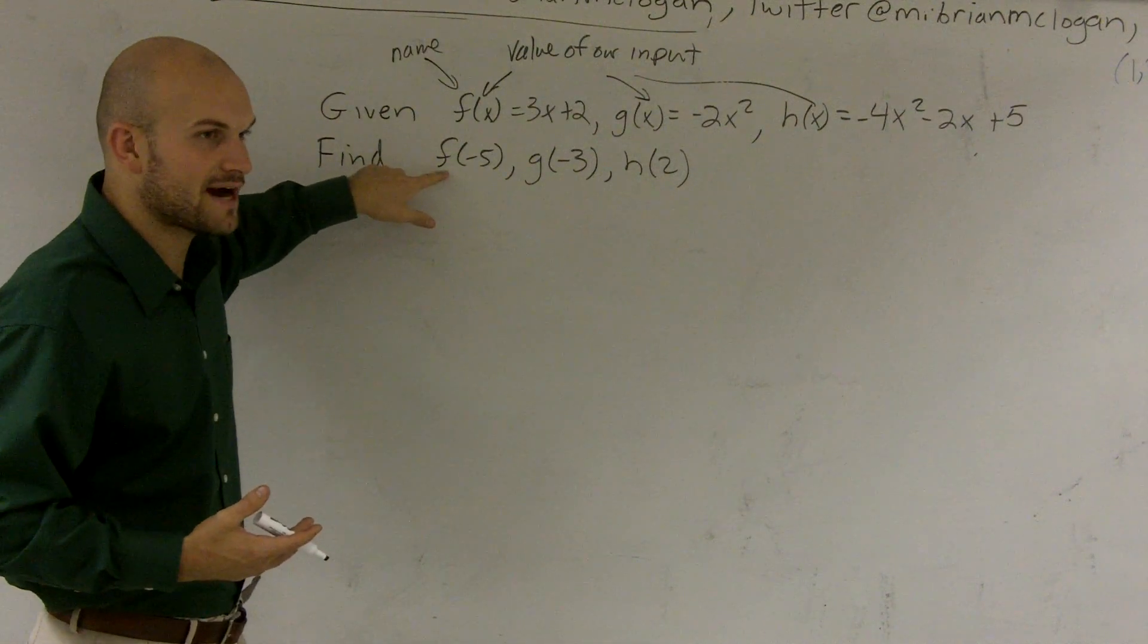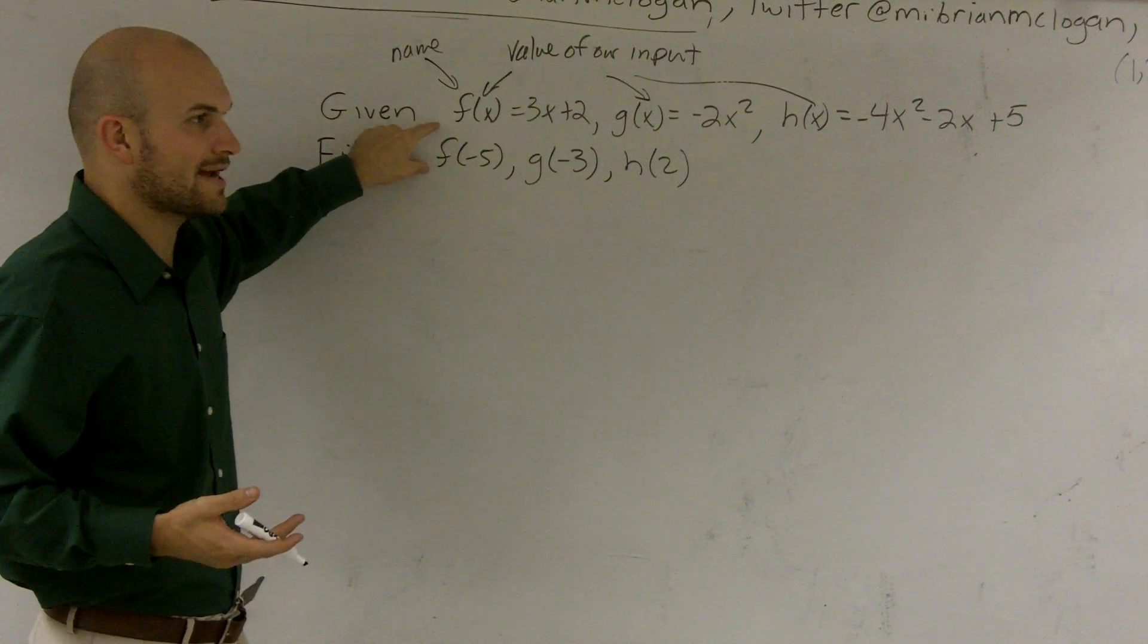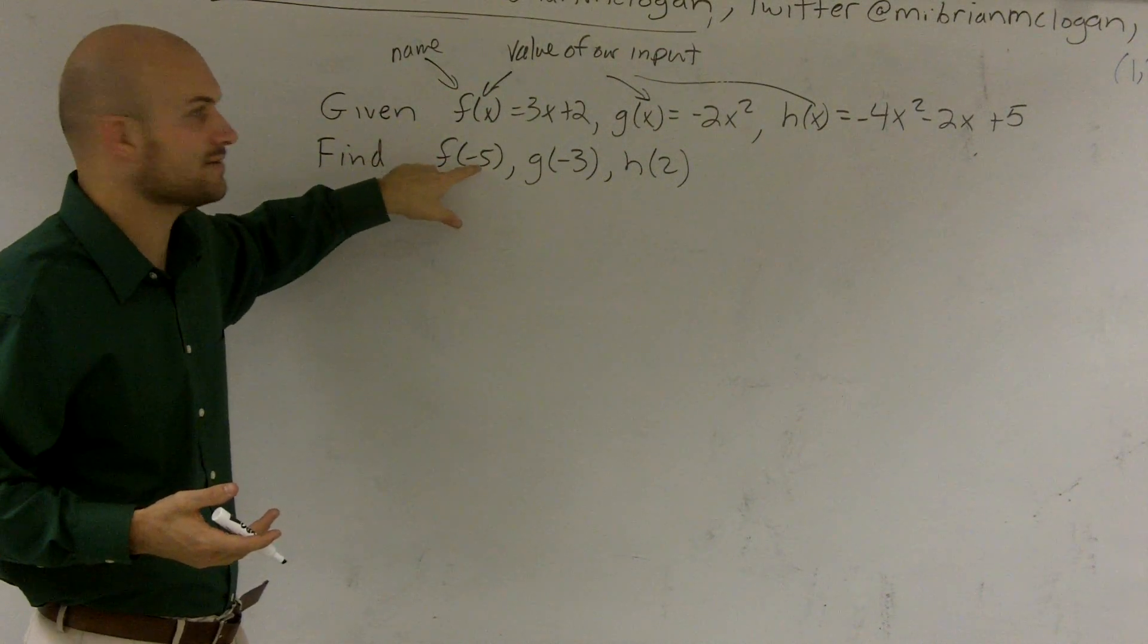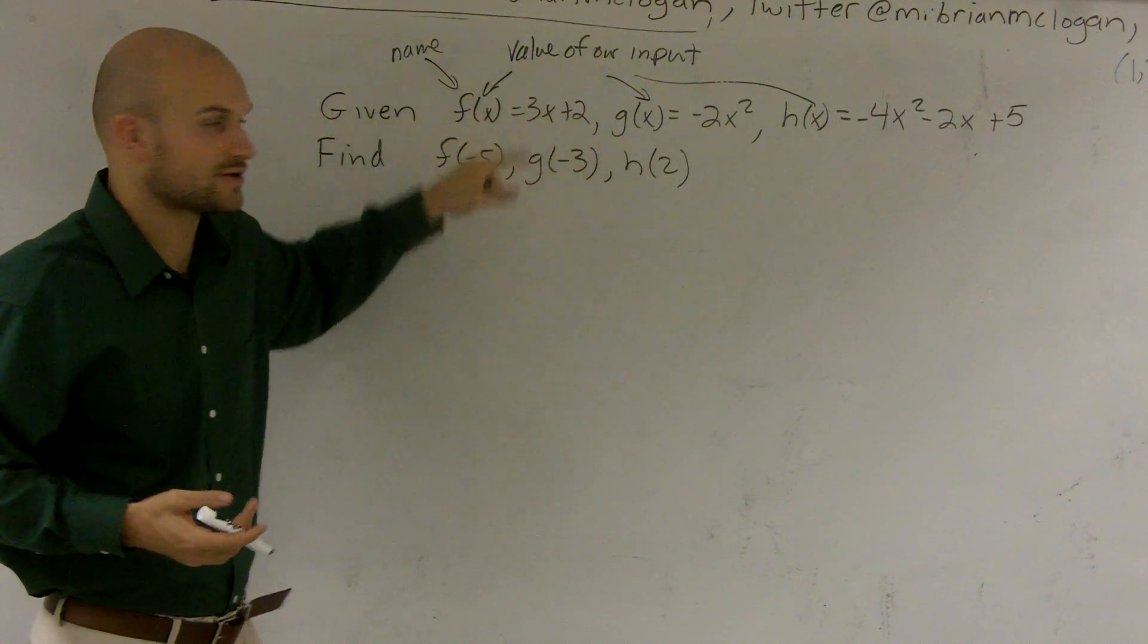Here, this one is f of negative 5. That's how we say it, f of negative 5. So I'm going to use Frank. Well, I'm going to have to evaluate Frank for the value of negative 5 of Frank for Frank's function.